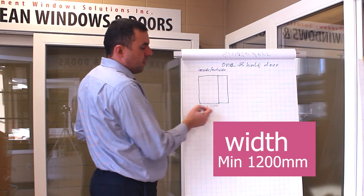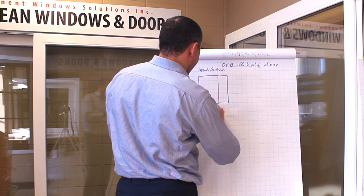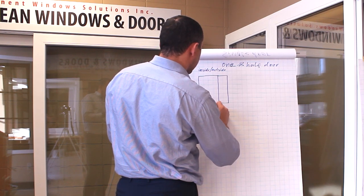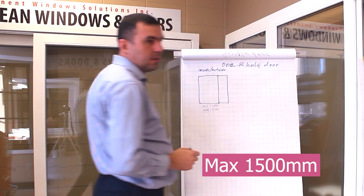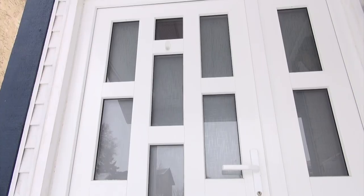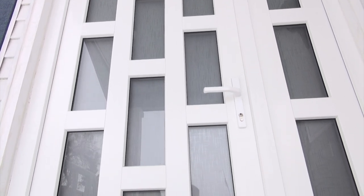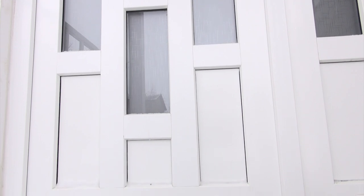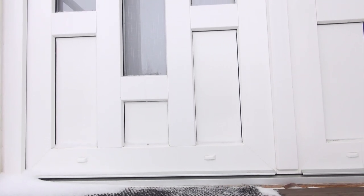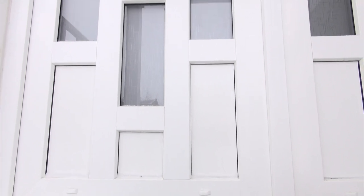So, minimum twelve hundred. Maximum, I would say, maximum fifteen hundred. Fifteen fifty, we can do one and a half. But if it's sixteen hundred and more, it's a double door. Yeah, absolutely. Because a double door looks symmetrical, looks nice here, so you do double door if it's more than that.